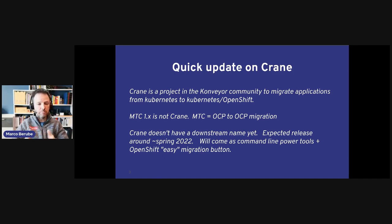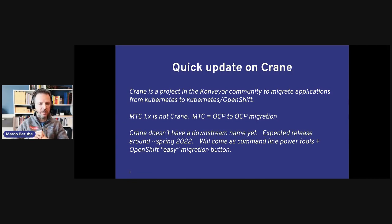Crane doesn't have a downstream product name yet inside Red Hat — it's just an upstream project right now. We expect something downstream around spring 2022. Crane will be a mix of command line power tools for advanced migrations, and in the future it could be leveraged with an OpenShift easy-button type of migration, as we want to make this part of the OpenShift product as a way to easily migrate applications between OpenShift clusters.